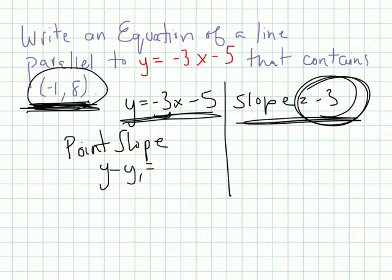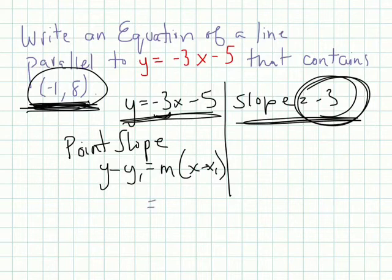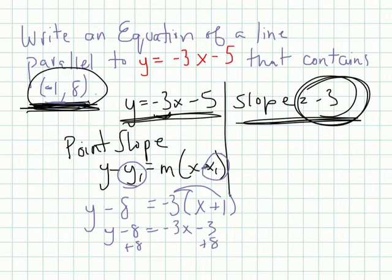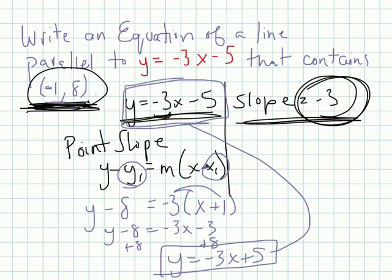Point-slope form is y minus y1 equals slope times (x minus x1). Our slope is negative 3, our x1 is negative 1 — so that becomes plus 1 — and our y1 is 8. Now in slope-intercept form: distribute the negative 3 to get y minus 8 equals negative 3x minus 3, then add 8 to both sides. So y equals negative 3x plus 5. This line is parallel to the original — they have the same slope of negative 3.